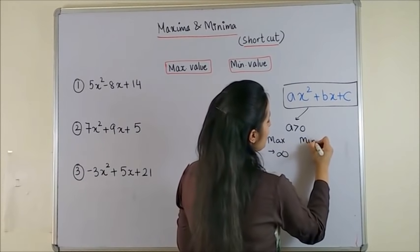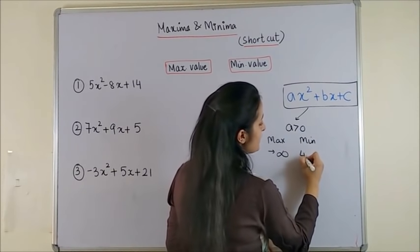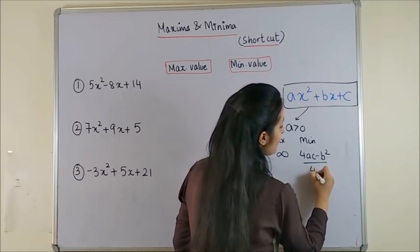And for the minimum, you get the answer to be simply 4AC minus B square by 4A.